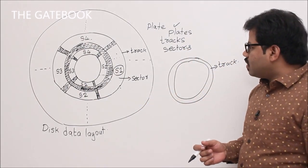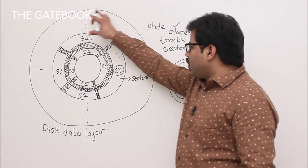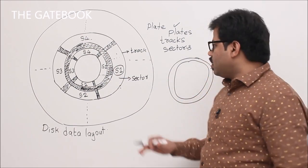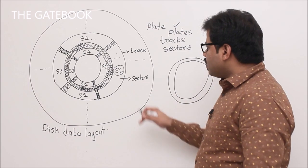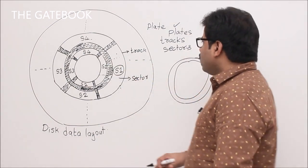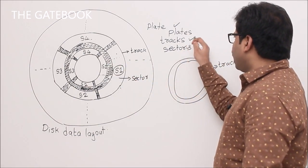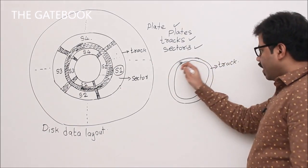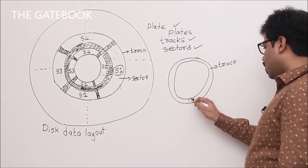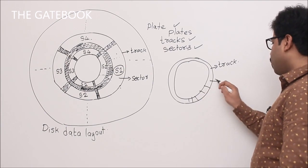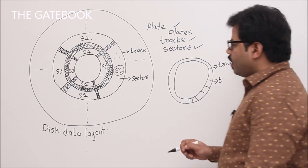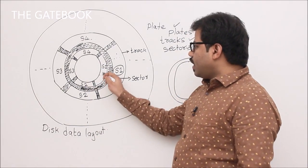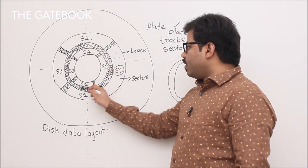First, let's look at this picture — this is called a plate. Your disk can have multiple plates; this is one of them. A plate is divided into circles, each called a track. This is a track, where you are going to store data.